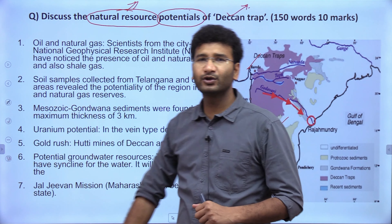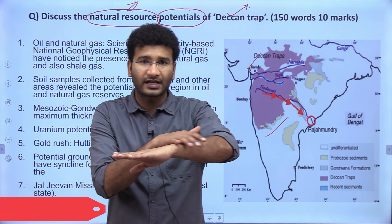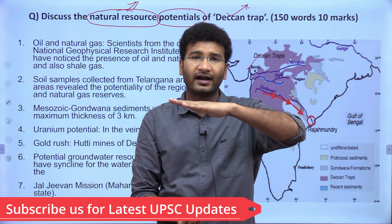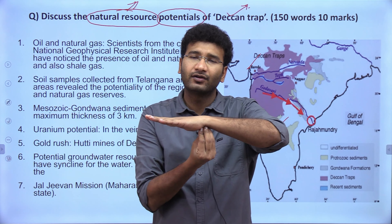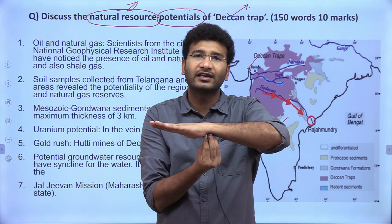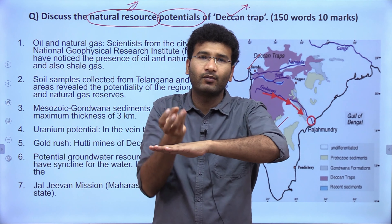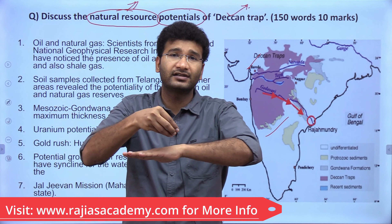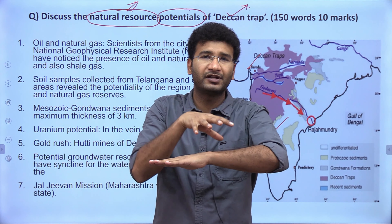The Deccan Trap was formed by volcanic activity beneath India. Over millions of years this volcanic activity was active and cooled down while India was in continuous movement, leading to the formation of multiple volcanic eruptions. The first formations south of the Deccan Trap include the Telangana plateau and Karnataka plateau. The Narmada, Tapi, and Mahanadi rivers are also gaps present in the Deccan Trap.